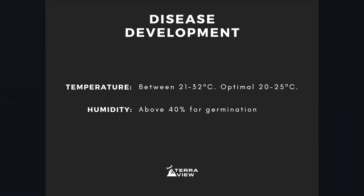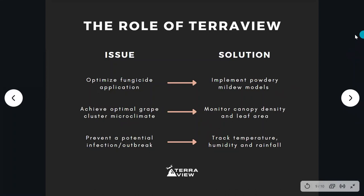For disease development, powdery mildew basically only depends on temperature. As long as humidity is above 40%, germination will occur — the requirements are not many. Vineyards in places with dry, sunny conditions need to pay a lot of attention. As long as temperature is between 21 and 32 degrees Celsius — optimally between 20 and 25 — there's a real chance this disease is developing.